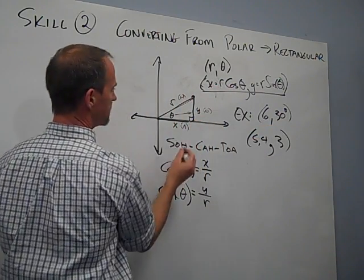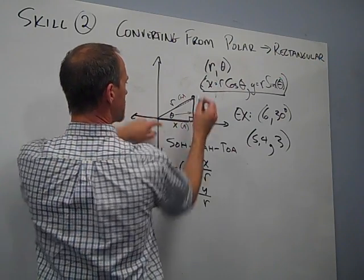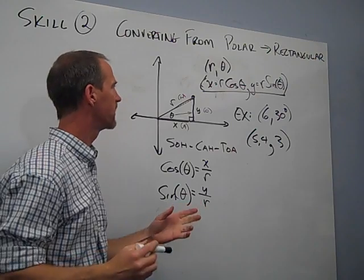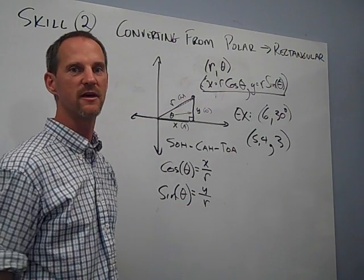So I could find this spot by going out about 5.4 and up 3, and I'd be at that same location. They are equivalent. They'll be right exactly on top of each other if you do it accurately. Okay, thanks.